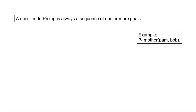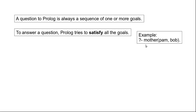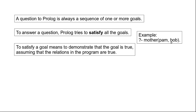A question to Prolog is always a sequence of one or more goals. Here we have the example of a query where we have only a single goal — we want to find out whether Pam is the mother of Bob or not. To answer a question, Prolog tries to satisfy all the goals that are in the question. So here we will try to satisfy the goal: whether Pam is the mother of Bob or not.